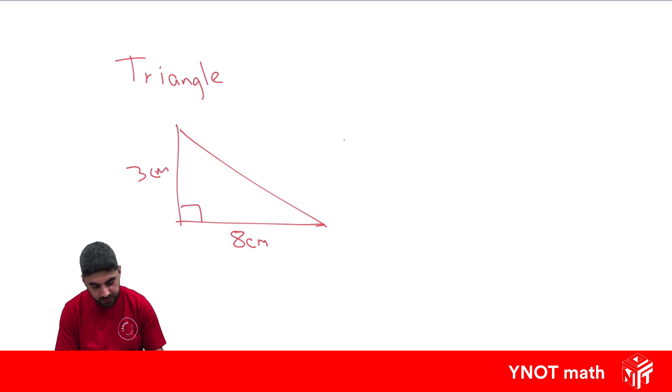And the area of a triangle is half times the base times the height. So it's a half times the base, which is eight, times the height, which is three.